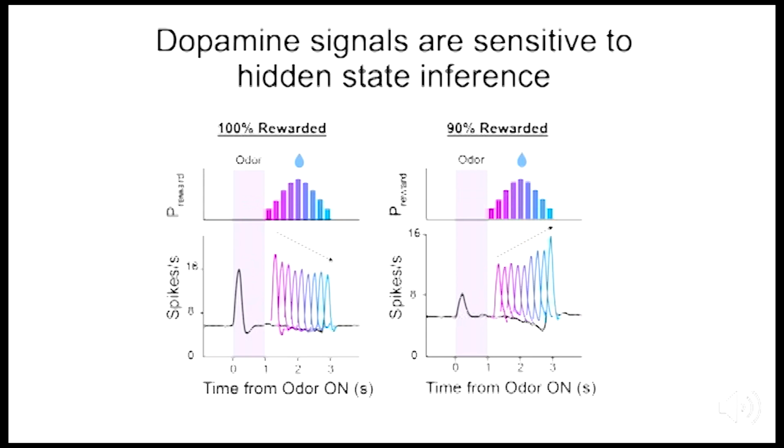This can be explained by taking hidden state inference into account. In the 100% rewarded task, the cue unambiguously signals entry into the interstimulus interval state, in which the animal knows for certain that a reward is coming. In the 90% rewarded task, the state is hidden. In 90% of trials, the cue means that the animal has transitioned into this rewarded interstimulus interval state, but in 10% of trials, there is a hidden state transition back into this unrewarded intertrial interval in which the animal will not receive a reward.